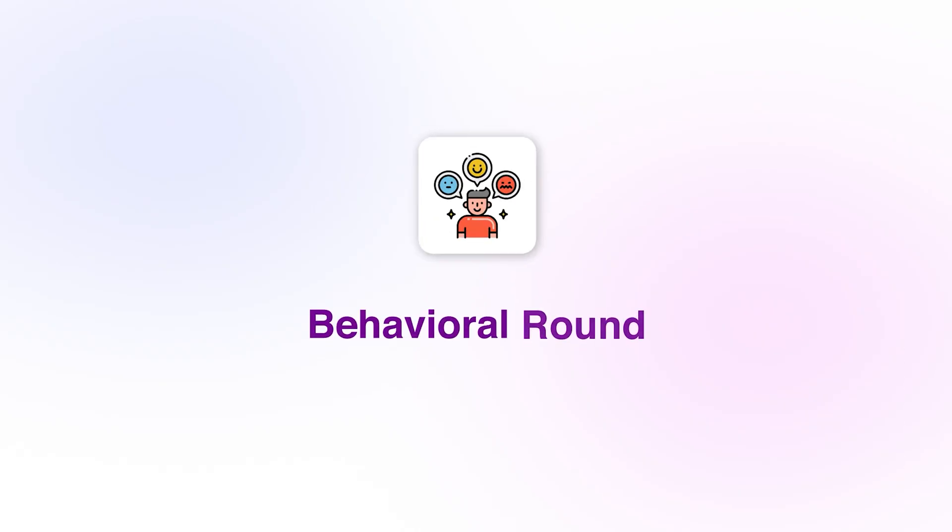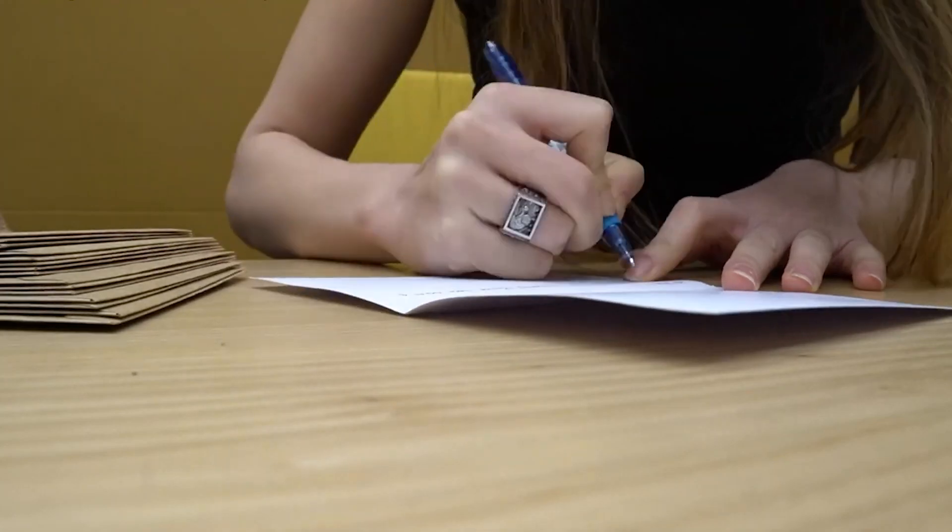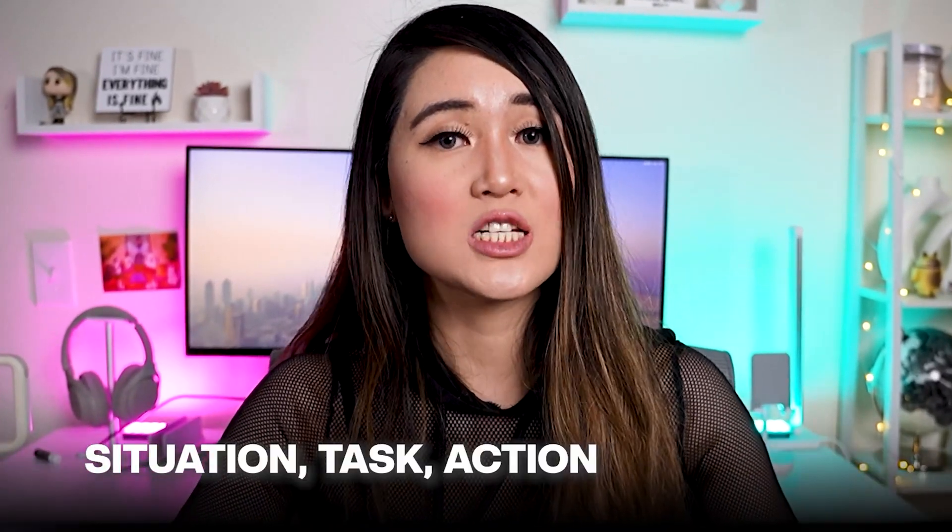Finally, last but not least, let's talk about the behavioral rounds. Like the coding challenges, there's no real difference between the behavioral rounds companies will ask new grads, mid-level, and senior and up candidates. However, your answer should convey a senior software engineer level of expertise, leadership, and problem-solving ability. I'd recommend making a list of common behavioral questions, thinking of scenarios that fit each, applying the STAR method — the situation, task, action, and results — and practicing your responses multiple times.